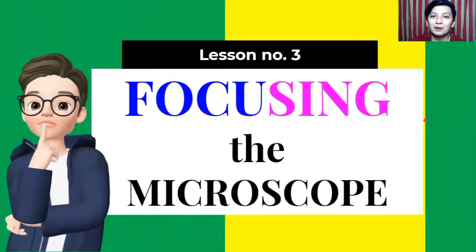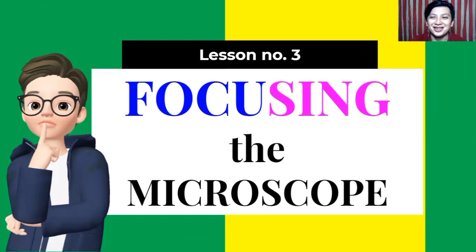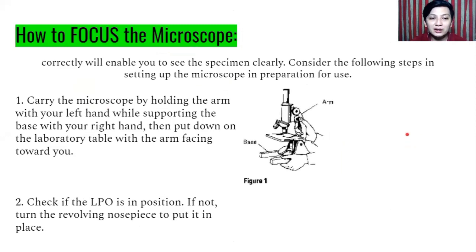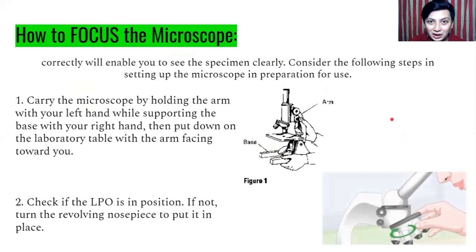For lesson number three, we will learn how to focus the microscope. Follow this step-by-step process so that you will be able to focus the specimen clearly and properly. Step one: carry the microscope by holding the arm with your left hand while supporting the base with your right hand, then put it down on the laboratory table with the arm facing towards you. Step two: check if the LPO is in position. If not, turn the revolving nosepiece to put it in place.